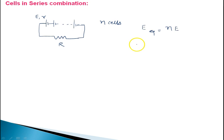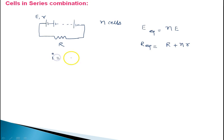The equivalent resistance of the circuit is external resistance R plus the net internal resistance Nr. The net current I equals NE divided by (R plus Nr). It does not matter whether the cells are in same or wrong polarity — resistance is always added.